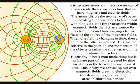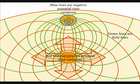When the atoms come together under their own gravity, time will synchronise, distorting the geometry of space-time, creating time variations between and within objects.